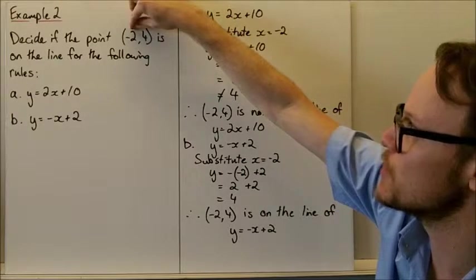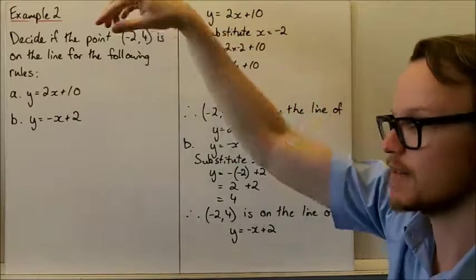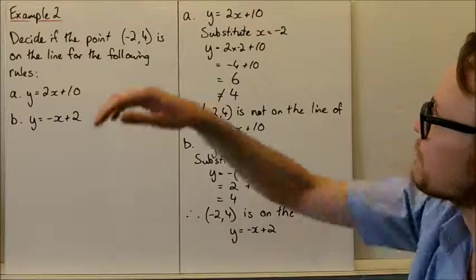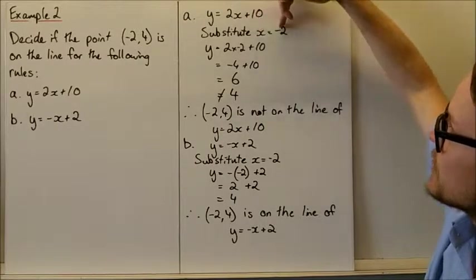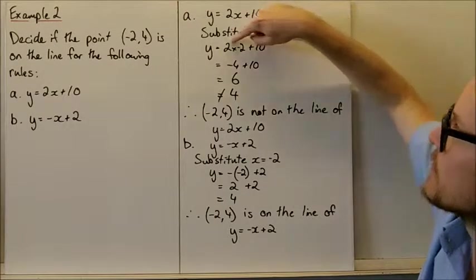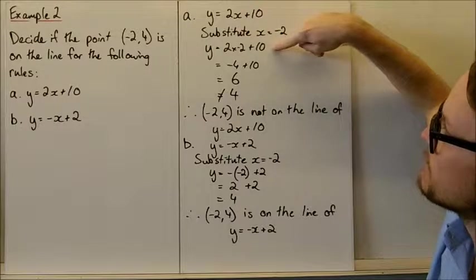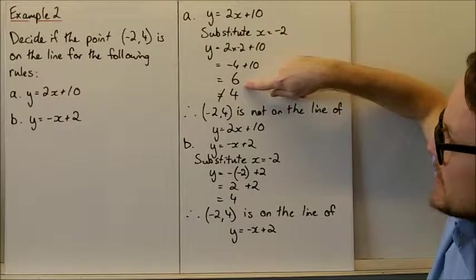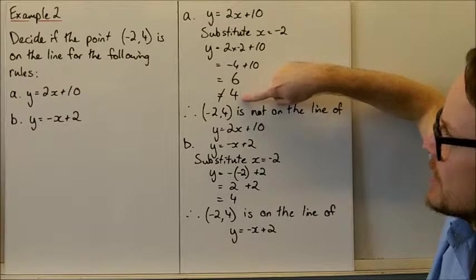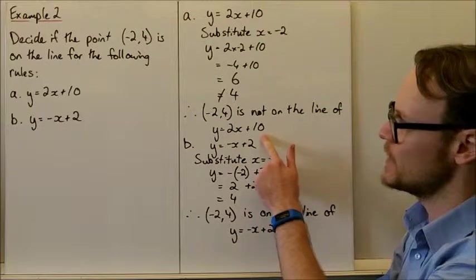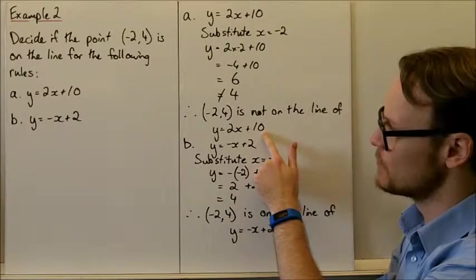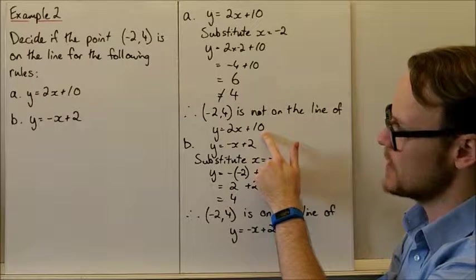For y equals 2x plus 10, if we substitute x equals negative 2, we get 2 times negative 2 plus 10. Working this out, we get y equals 6. That's not 4, so that point is not on the line y equals 2x plus 10.